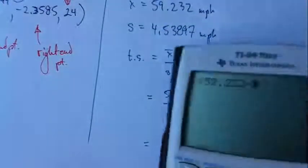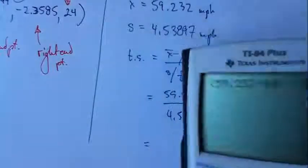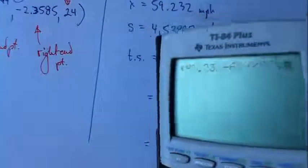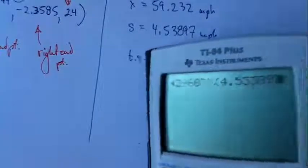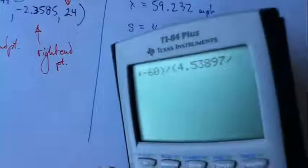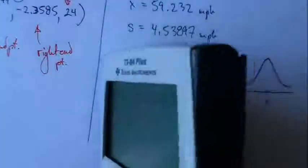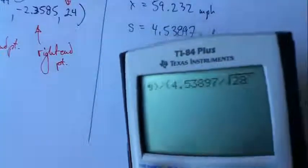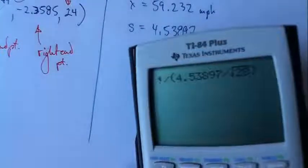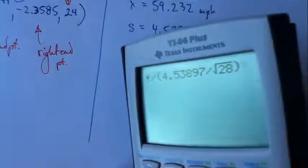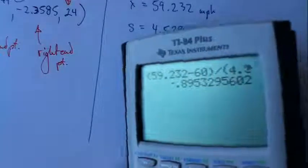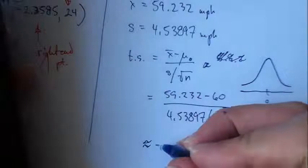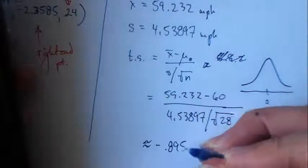59.232 minus 60, right? Divide it by 4.53897 over the square root of 28. We get negative 0.8953 approximately. Negative 0.8953, okay?